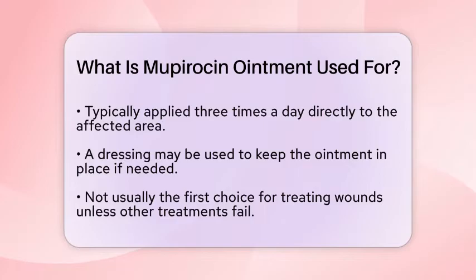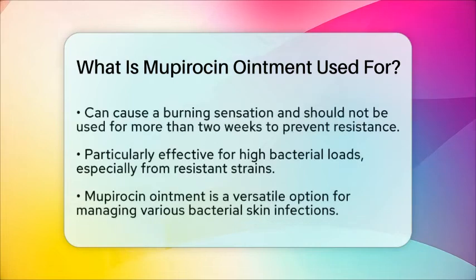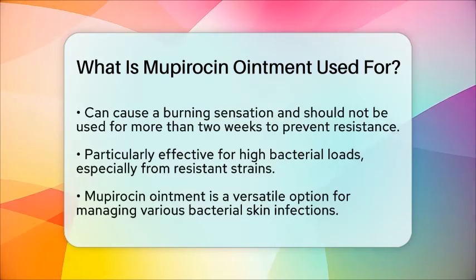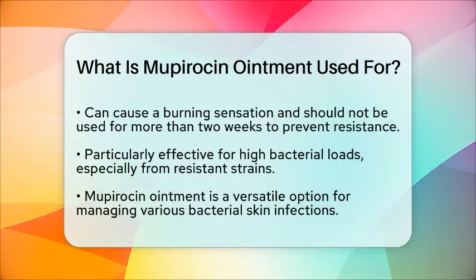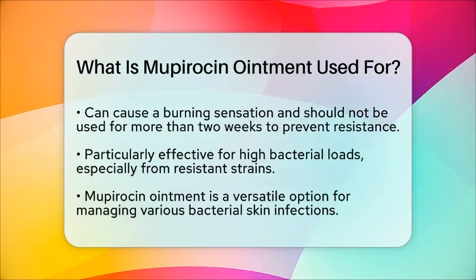While Mupirocin is effective for many bacterial skin infections, it is not usually the first choice for treating wounds unless they do not respond to other treatments. This is because it can cause a burning sensation and should not be used for longer than two weeks to avoid resistance. In wound care, Mupirocin ointment is particularly useful when there is a high bacterial load, especially from strains like MRSA or Streptococcus pyogenes, and when other treatments have not worked or are not appropriate.